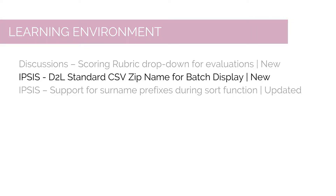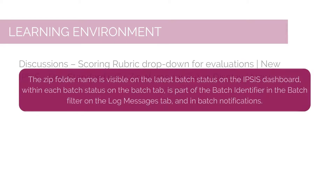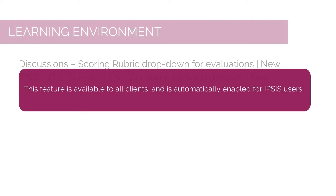To assist with the usability of Ipsys batch information, the ZIP folder name is now visible in Batch Information in Ipsys and in the Batch Notification, allowing clients to identify which locally saved batch matches a specific batch process in Ipsys. The ZIP folder name is visible on the latest Batch Status on the Ipsys dashboard, within each Batch Status on the Batch tab, as part of the Batch Identifier in the Batch Filter on the Log Messages tab, and in Batch Notifications. This feature is available to all clients and automatically enabled for Ipsys users.